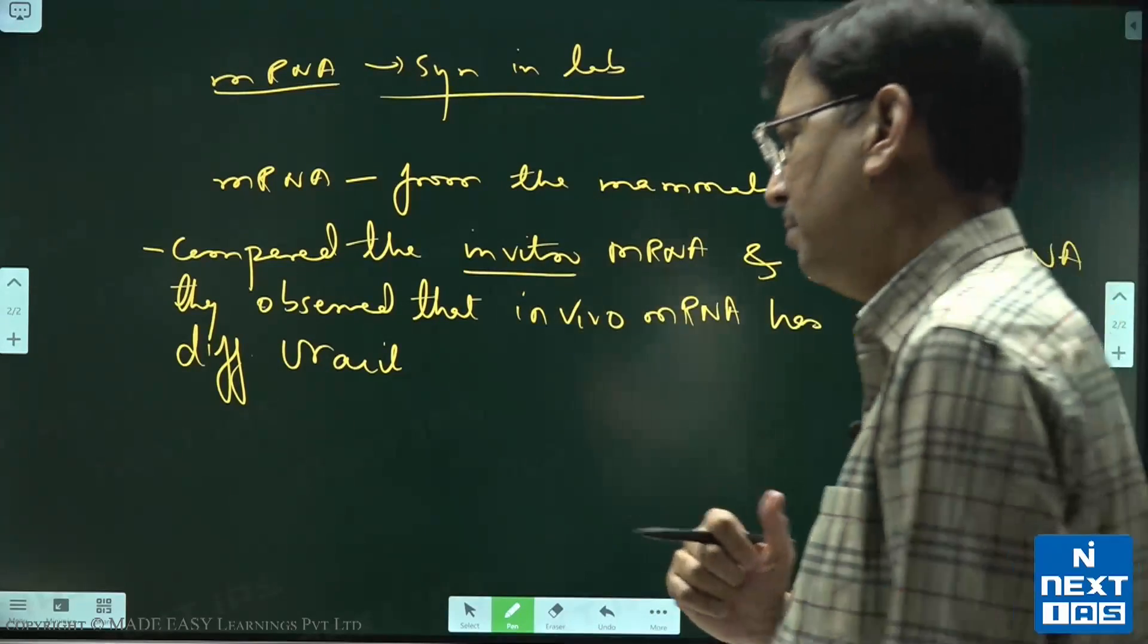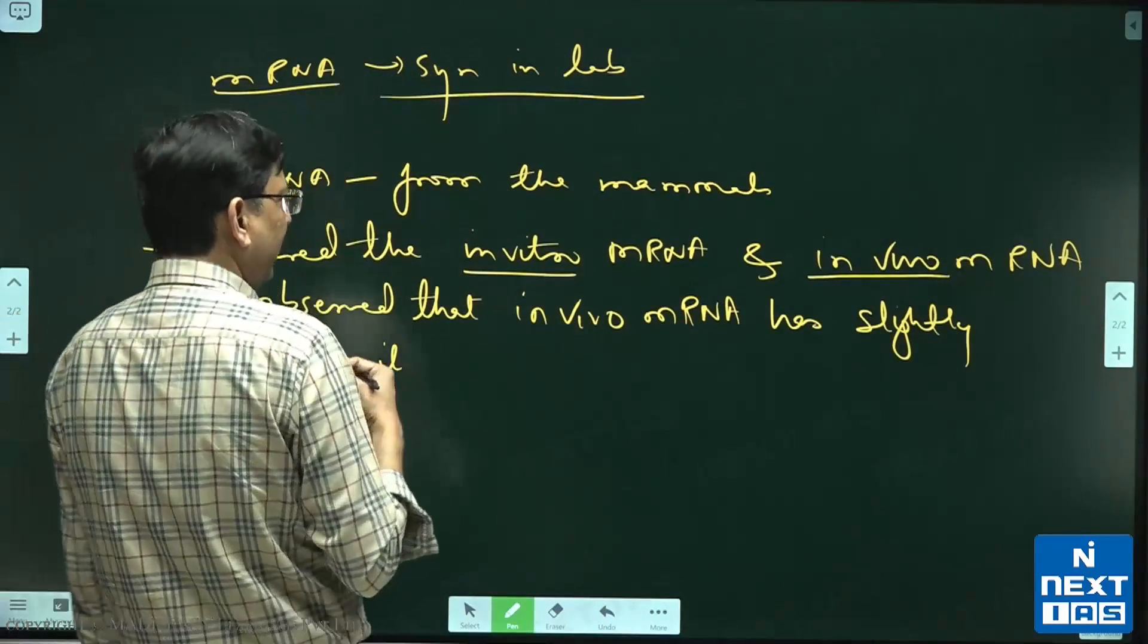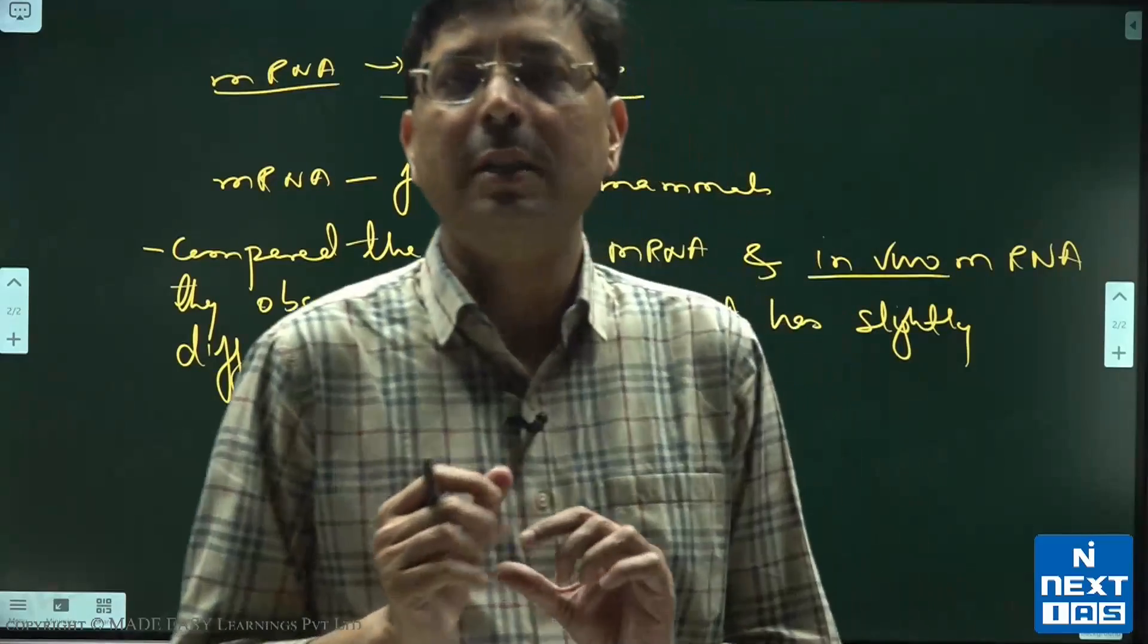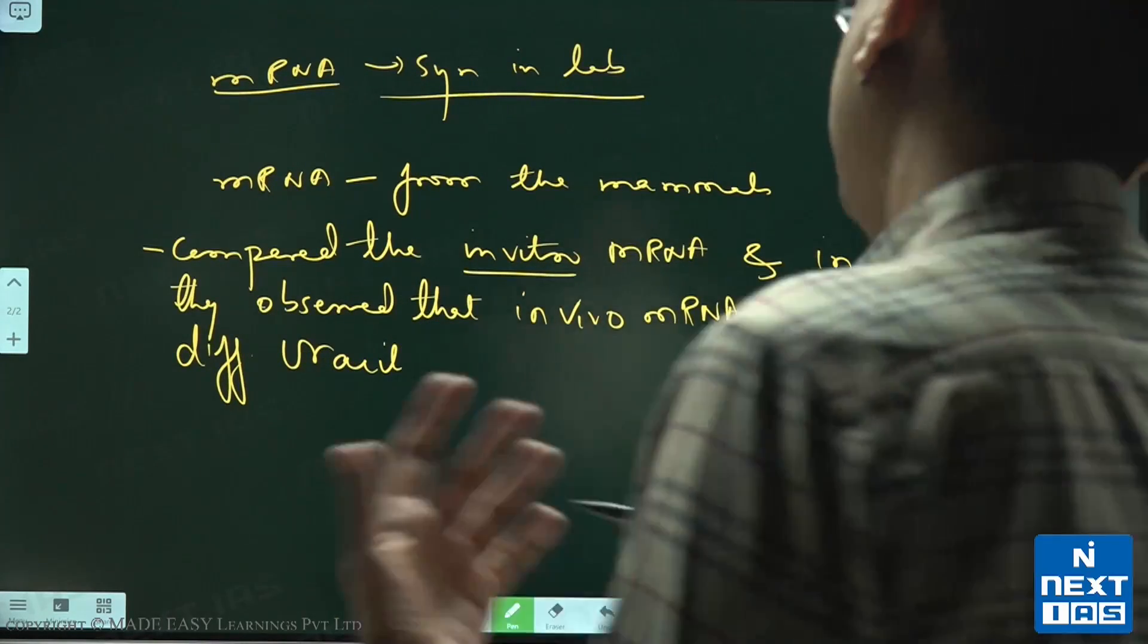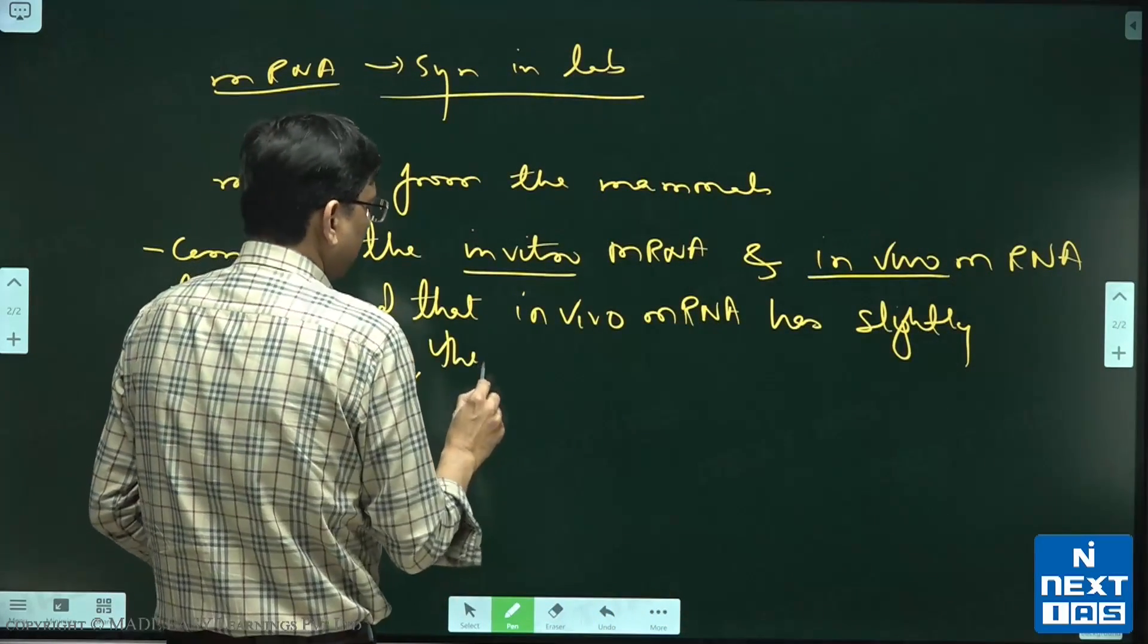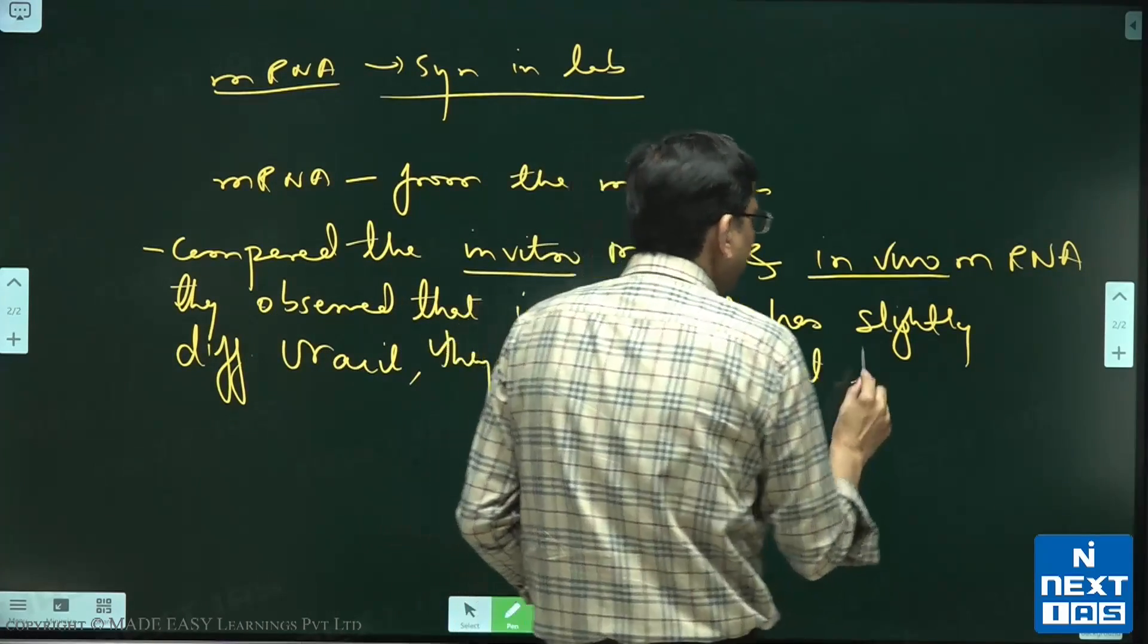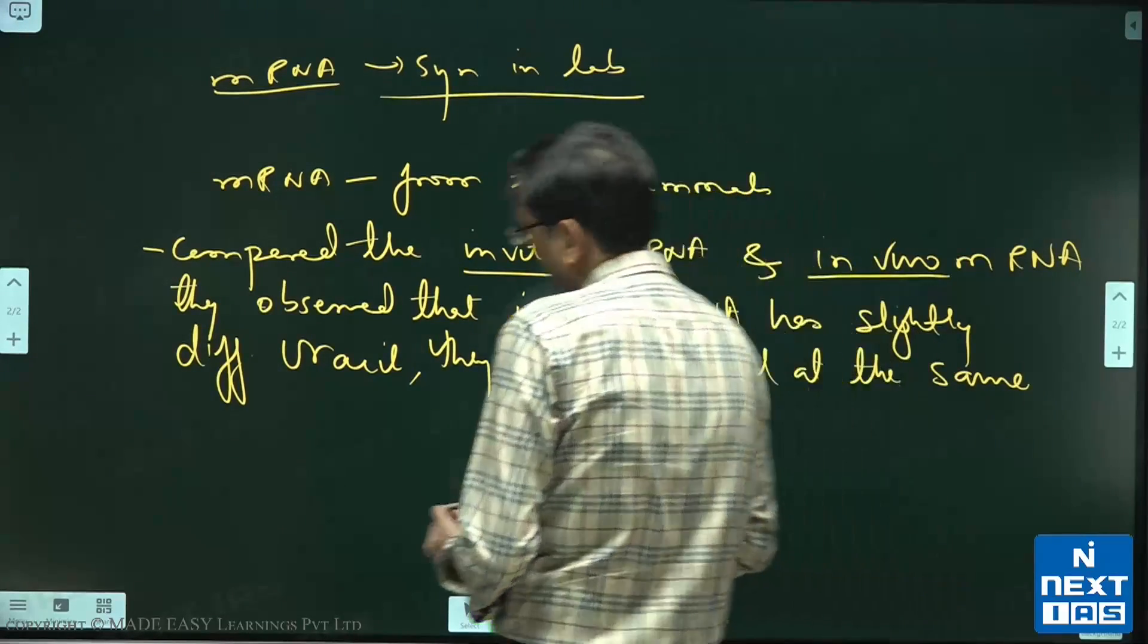They found that the mRNA which was taken from the mammal differs from the mRNA made in the lab. And primarily, the difference was in the uracil part of the mRNA. And then what they did? They modified uracil at the same place.